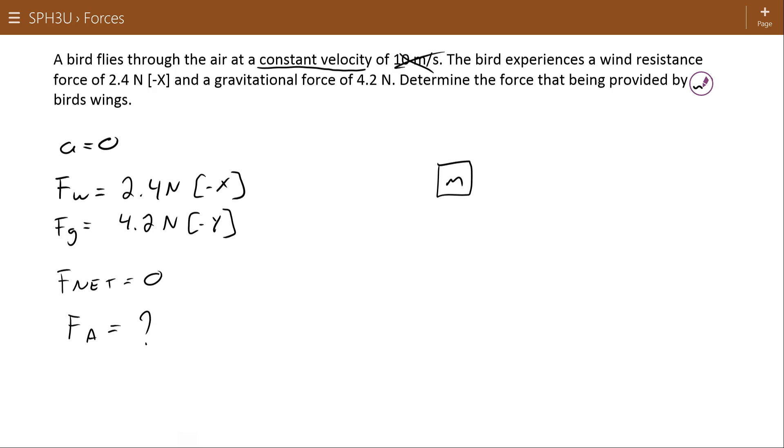Here's a bird. It has some mass, I don't know what that is, it doesn't particularly matter. It has a gravitational force of 4.2 Newtons and a wind resistance force. It says negative x, so I'll make it go in the negative x direction of 2.4 Newtons. Again, I almost always will draw the force of gravity pulling the object down. And this wind resistance, I'd conceptualize that as pushing on the front of the bird, but that's just the way I think about it.